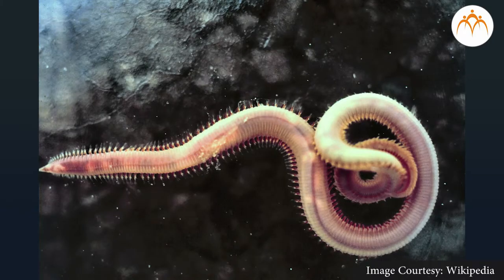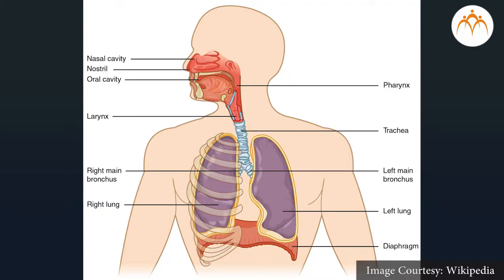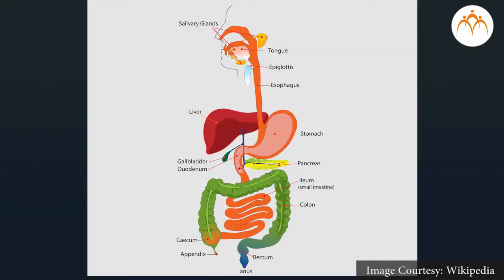Example of tissue-organ grade: flatworms. Organ-system grade organization — these animals have different organs joined together to form organ systems that perform specific functions. Example: human organ systems like the respiratory and digestive systems.